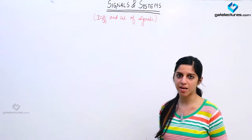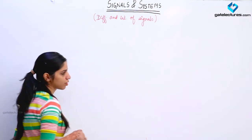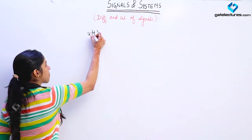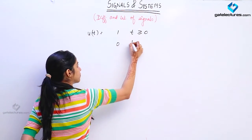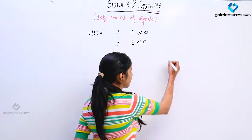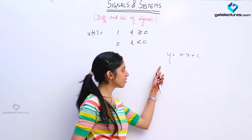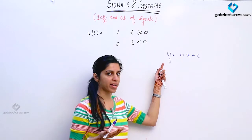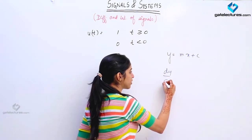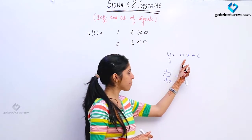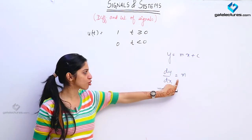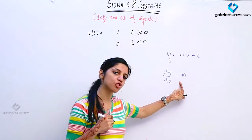We are starting with unit step — how we are able to express unit step as the differential of unit ramp or the integral of unit impulse. See, whenever you are having any function of the form y = mx + c, this is the definition of a line. When you differentiate y with respect to x, the differentiation of mx is m and the differentiation of the constant is 0. So when you differentiate a line, what you obtain is its slope. That is why we say differentiation of a line gives its slope.